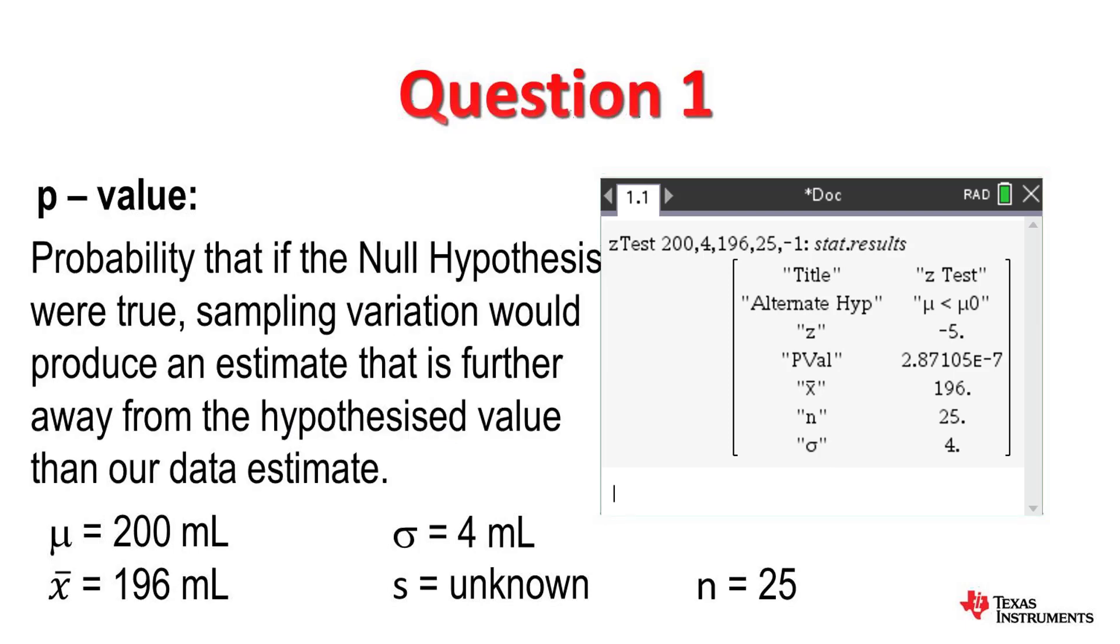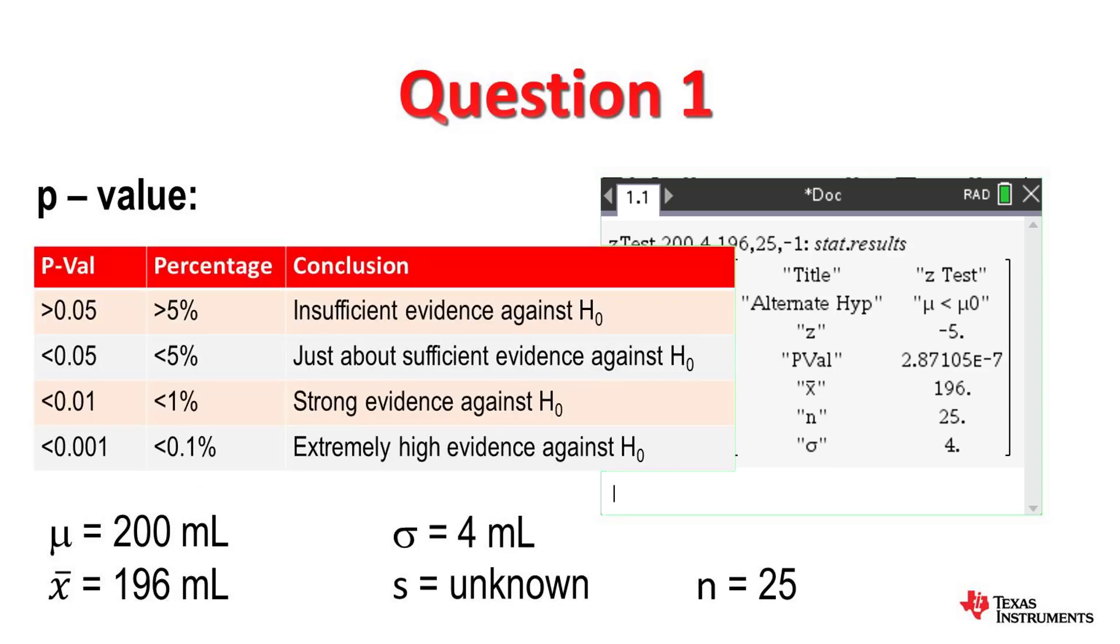The p-value is 2.87 into 10 raised to the power negative 7, and Z value is negative 5. This clearly tells us that it's a very small value. Based on this extremely small p-value, we accept the alternative hypothesis and reject the null hypothesis.